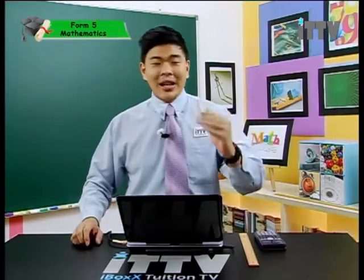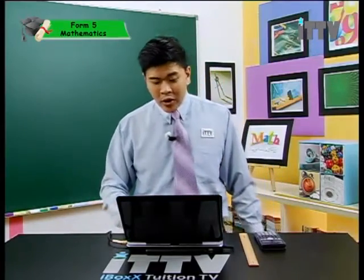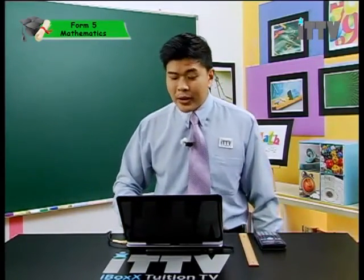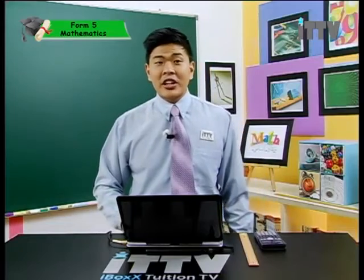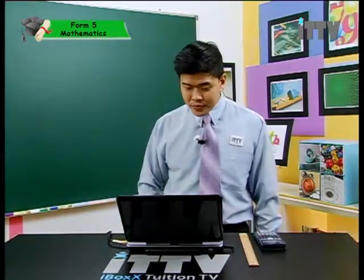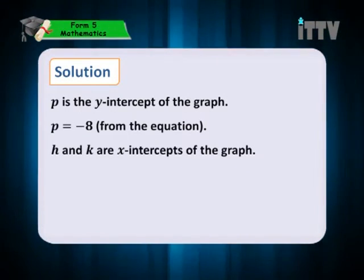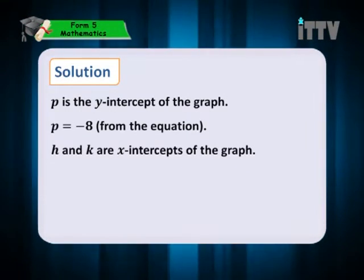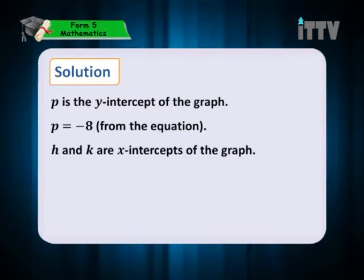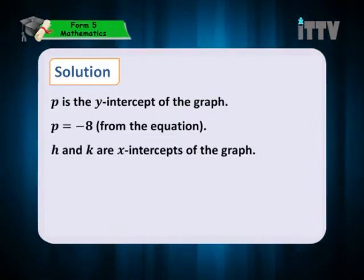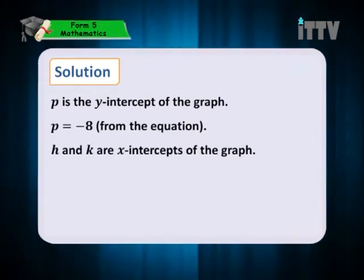Let's discuss the solution together. We will start with finding p, and it's very simple. Look at the function again — the equation is y equals to 2x-square minus 8. p is the y-intercept of the graph, and p equals negative 8. Straight away from the equation, you can see that the y-intercept is negative 8.